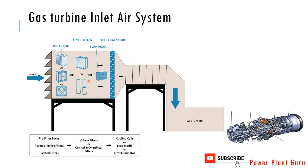These filters may be of different shapes and sizes. One is cylindrical and one is a conical type of filter. These filters are generally three micron in size — they will restrict any particle of more than three microns from going inside the gas turbine.